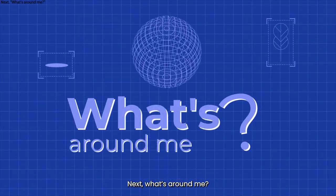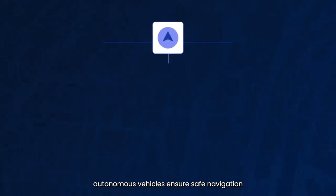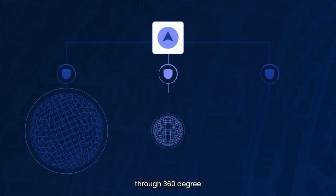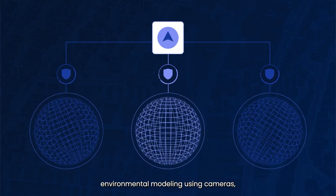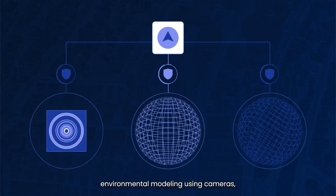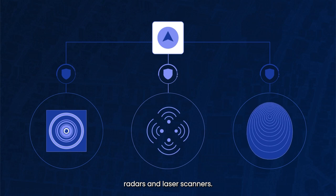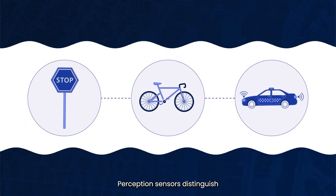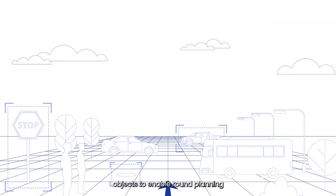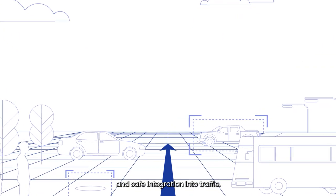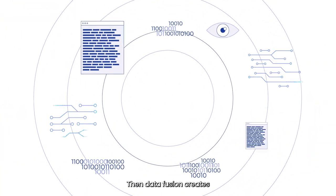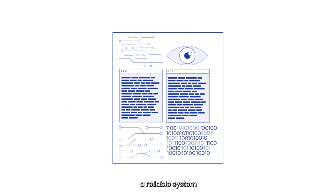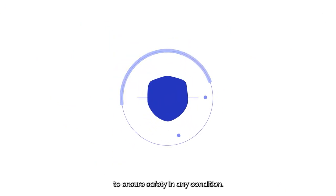Next, what's around me? Autonomous vehicles ensure safe navigation through 360-degree environmental modeling using cameras, radars, and laser scanners. Perception sensors distinguish static and dynamic objects to enable route planning and safe integration into traffic. Data fusion creates a reliable system to ensure safety in any condition.